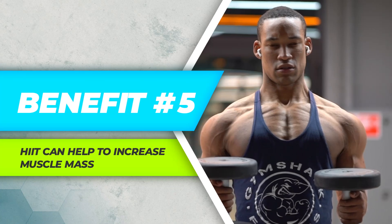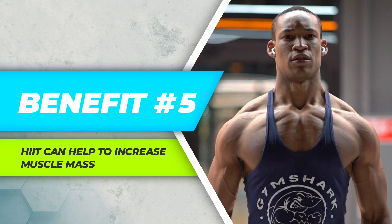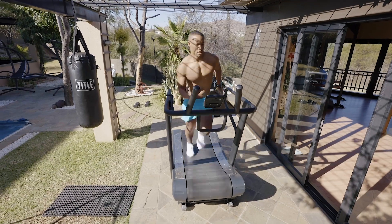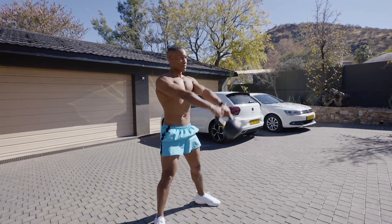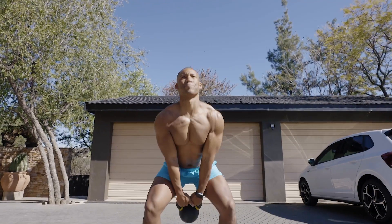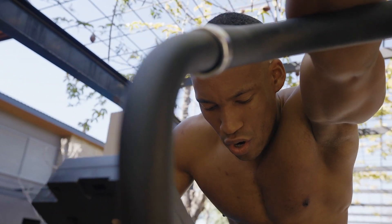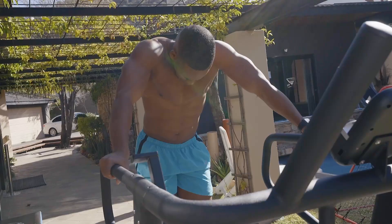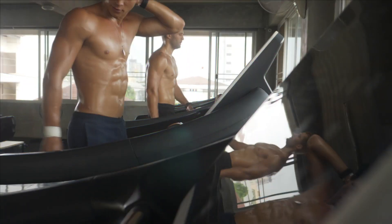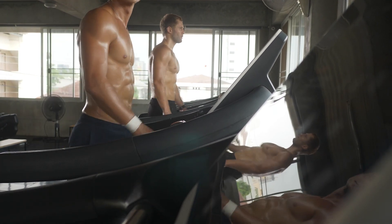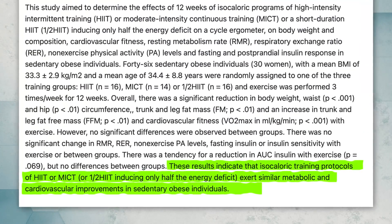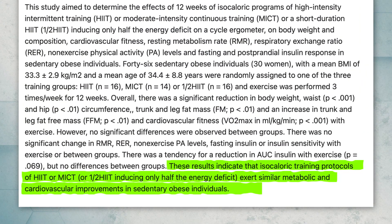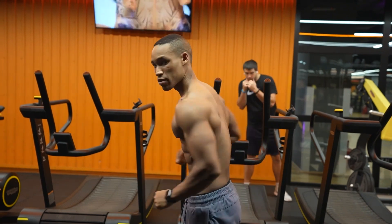Benefit number five: HIIT can help to increase muscle mass. Most HIIT movements involve cardio exercises such as running, cycling, or plyometric movements such as jumping, hopping, lunging, and skipping. But there's evidence that HIIT can help increase muscle mass in beginners and people who haven't performed resistance training in a long time. A 2015 study in the International Journal of Sports Nutrition and Exercise Metabolism found that obese individuals who performed HIIT sessions saw an improvement in their health, a reduction in body fat, and an increase in muscle mass and strength.